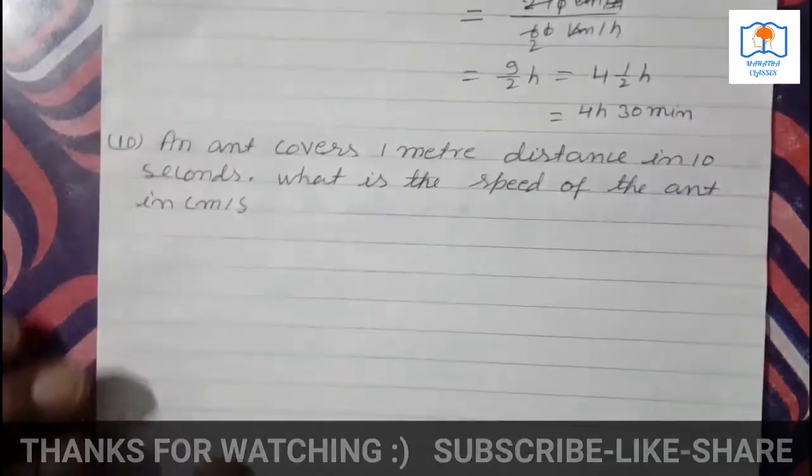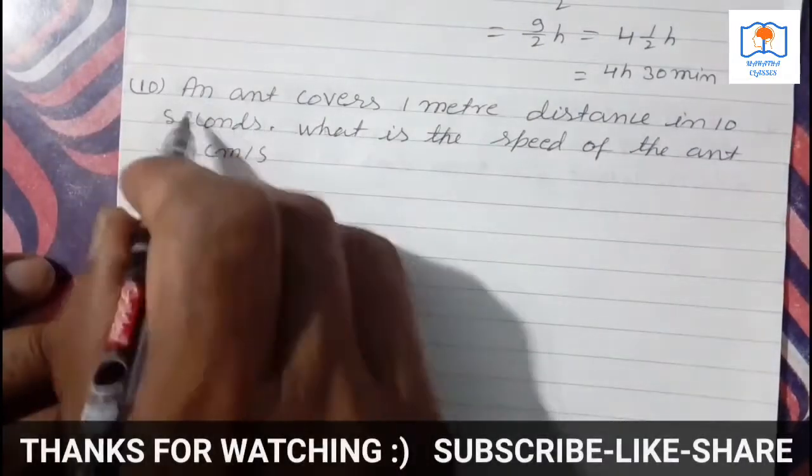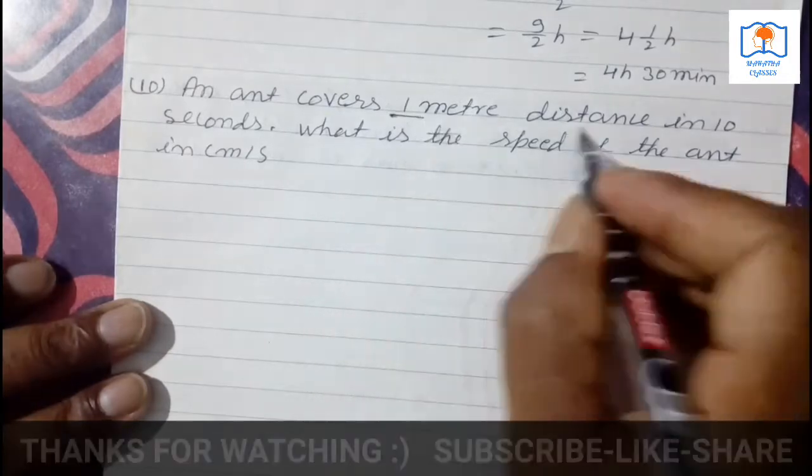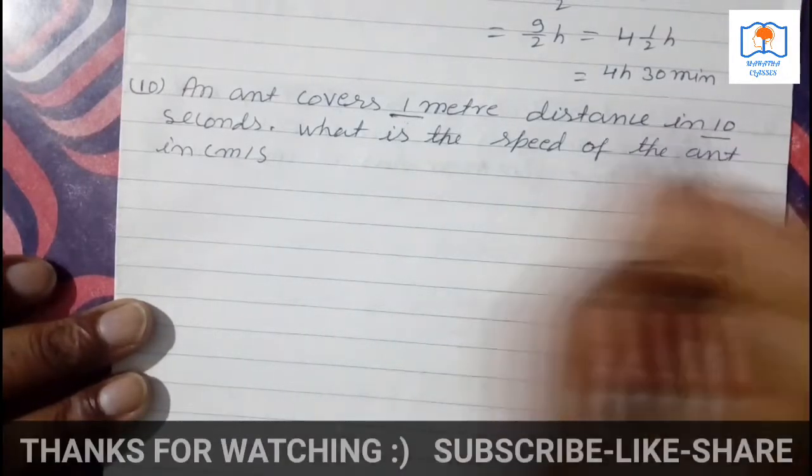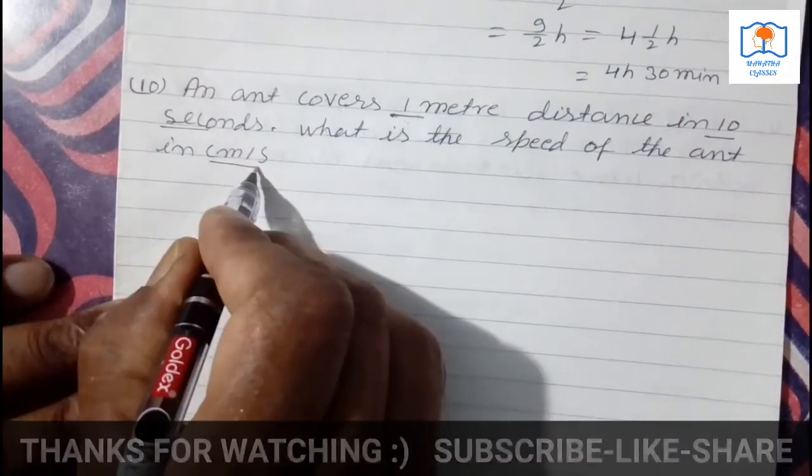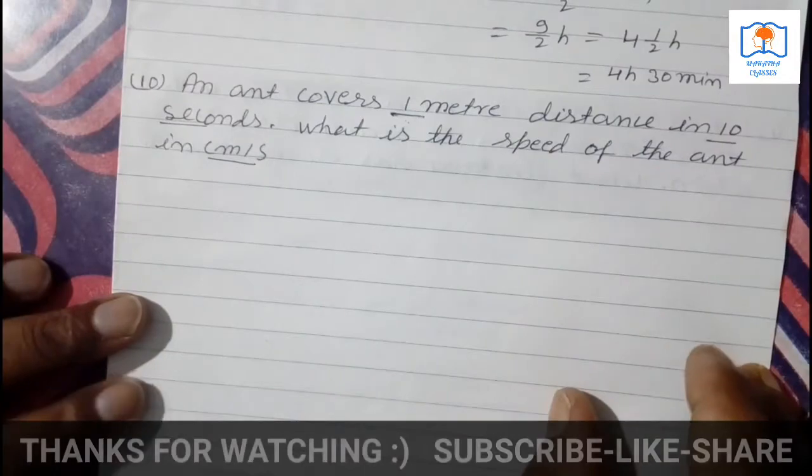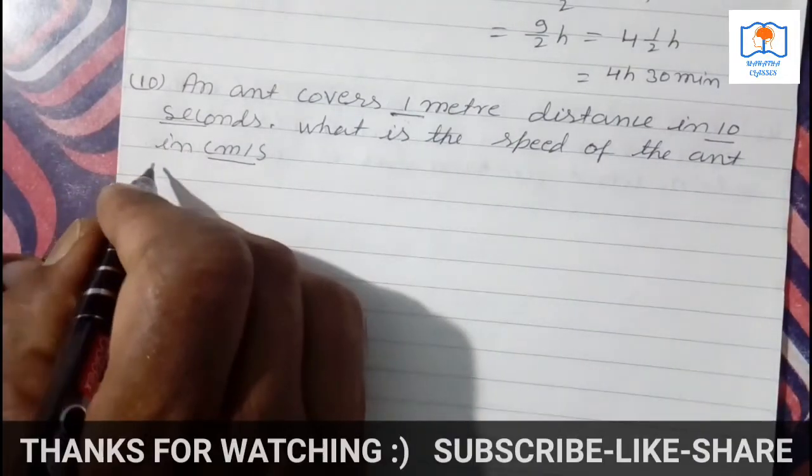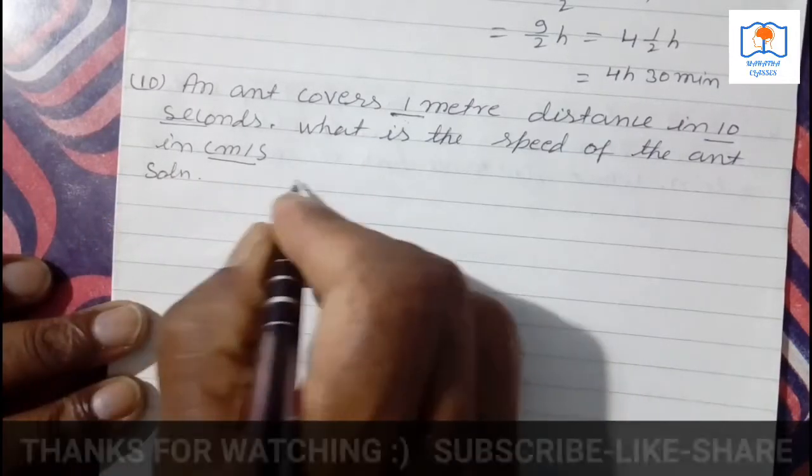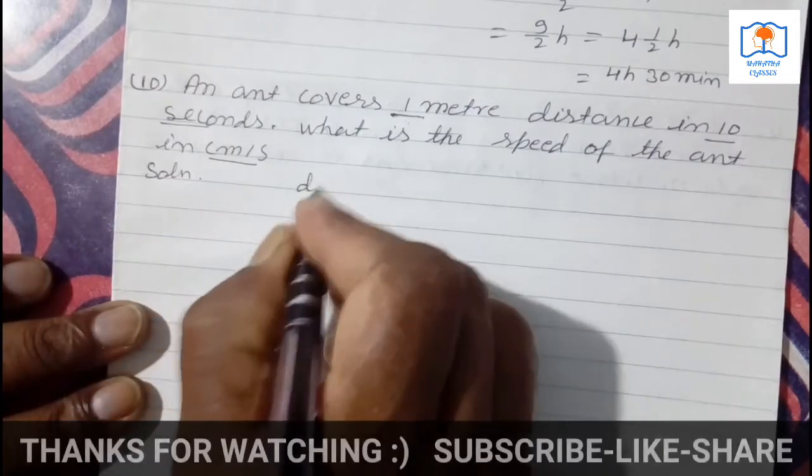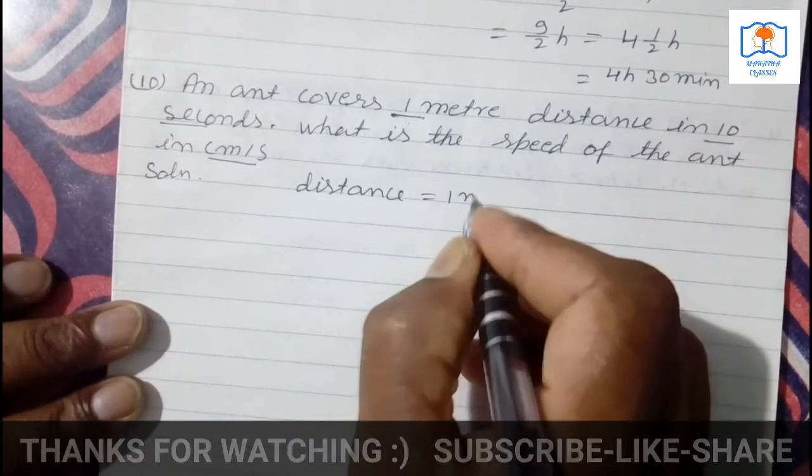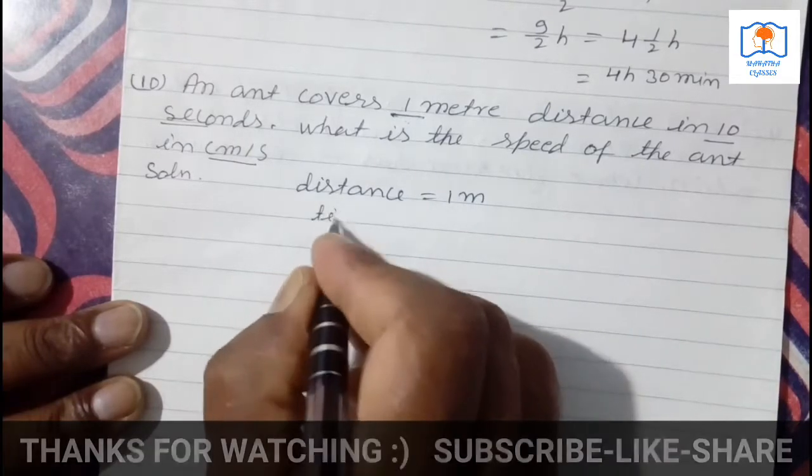An ant covers 1 meter distance in 10 seconds. What is the speed of the ant in centimeter per second? Calculate speed per second. Children, first write the given data clearly. What is the distance? 1 meter. Time?